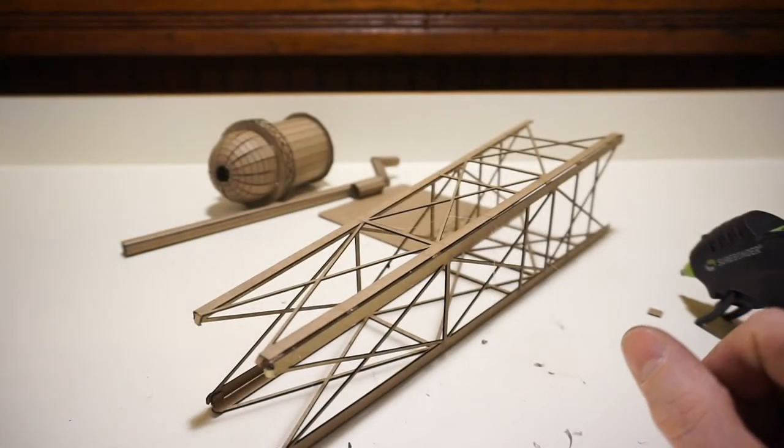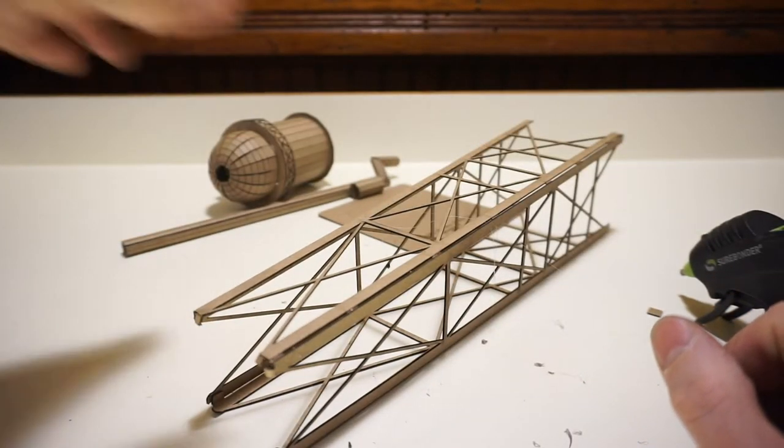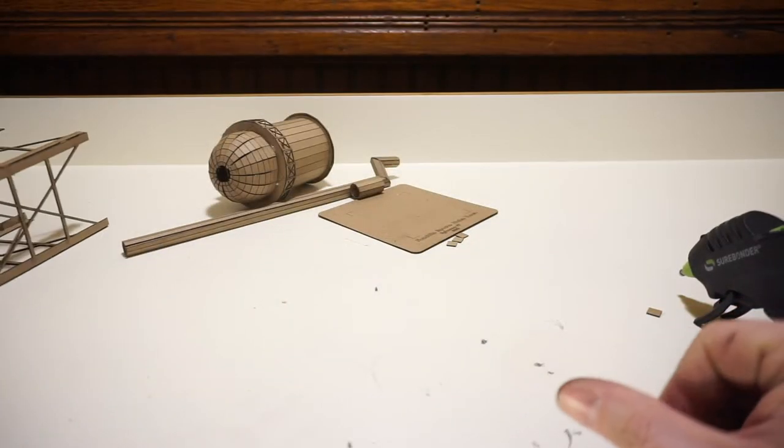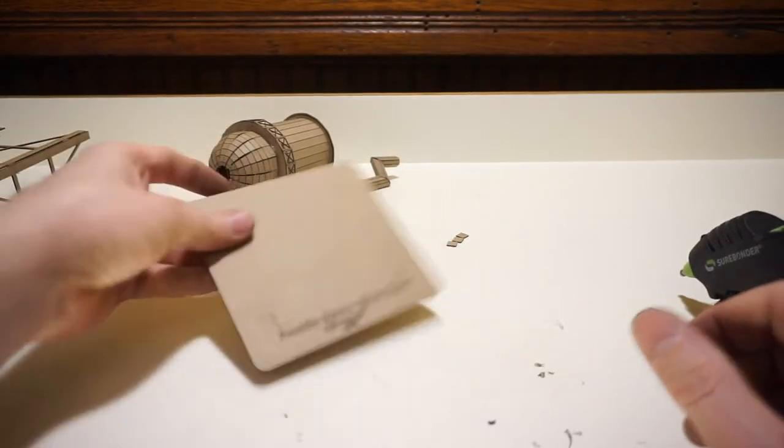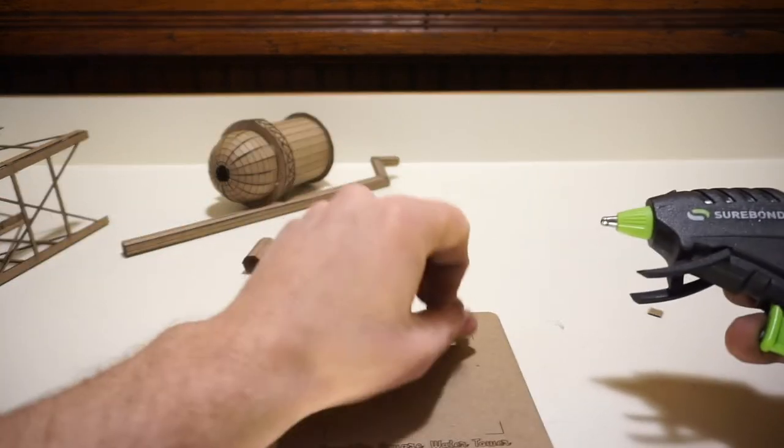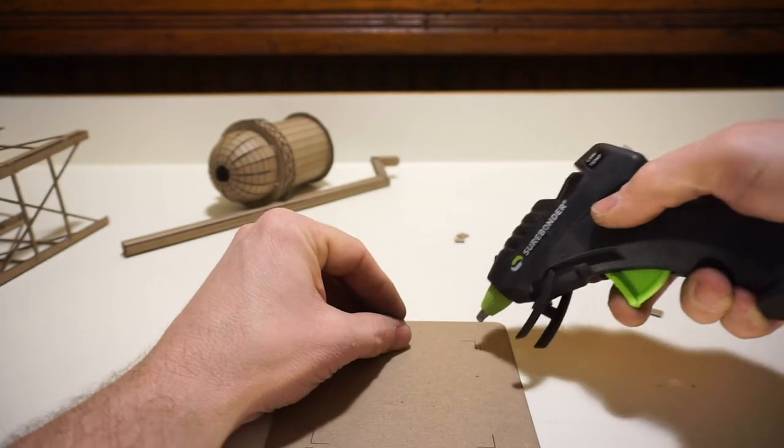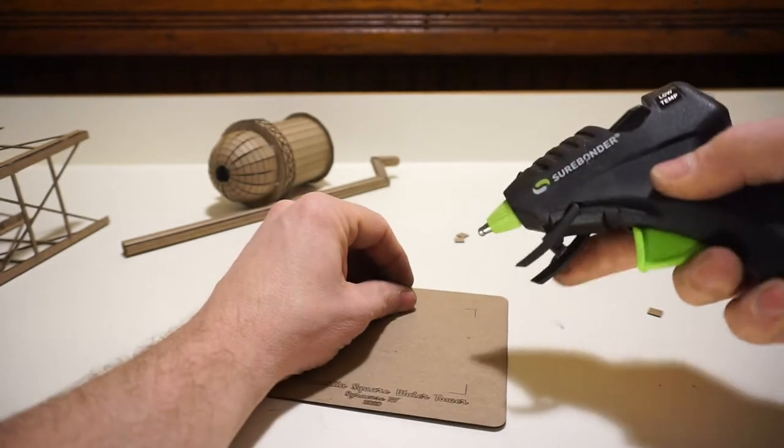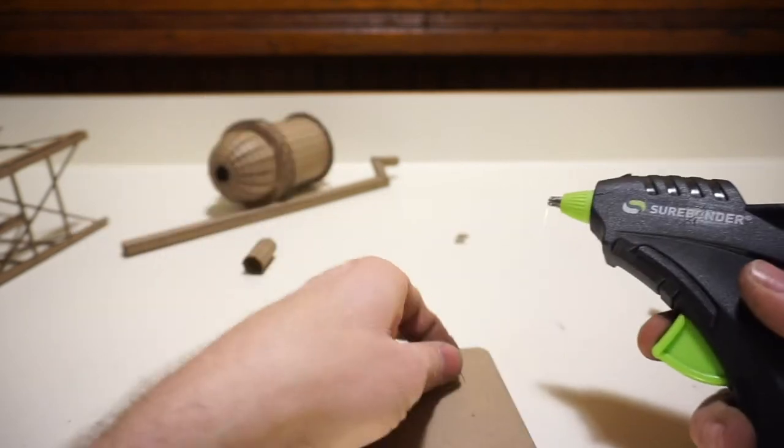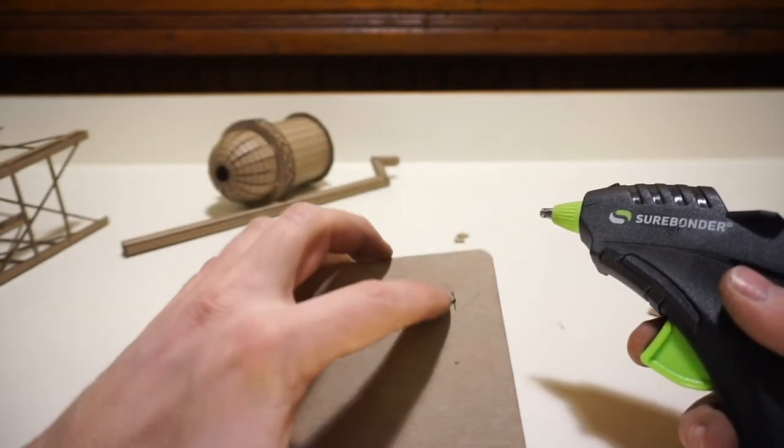All right, so that's in place. Now what we're going to do is grab our base piece and we're going to glue down our little guide squares. Those are going to be applied, a little dot of glue here, and then our square will go right on top.